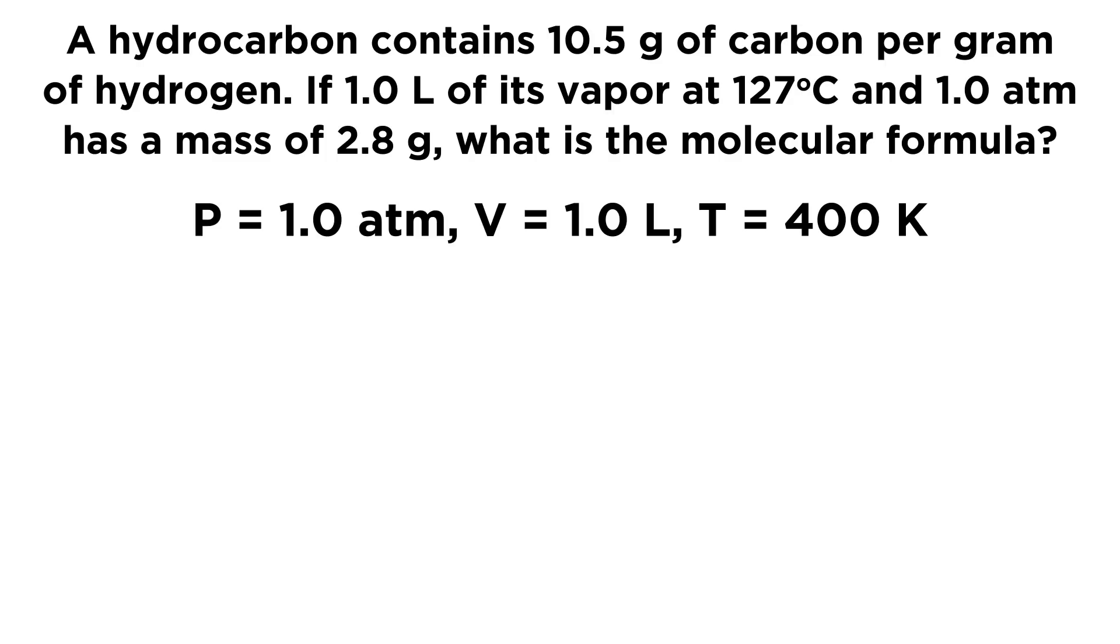To start, let's list out the data that we have. We have a pressure of one atmosphere, a volume of one liter, and a temperature. Remember, whenever we do calculations with temperature, we need that to be in Kelvin. So we take our 127 degrees Celsius and add 273 to get 400 Kelvin. That is all the data we have, and we know we're dealing with a vapor, so we can treat this as an ideal gas.